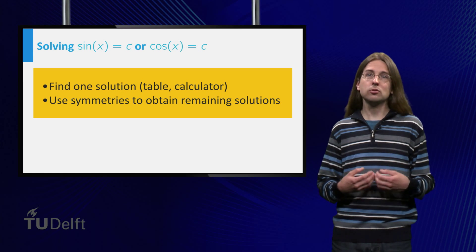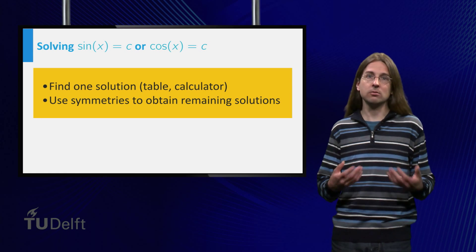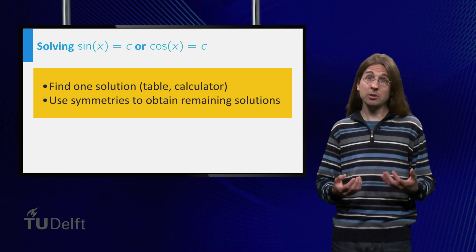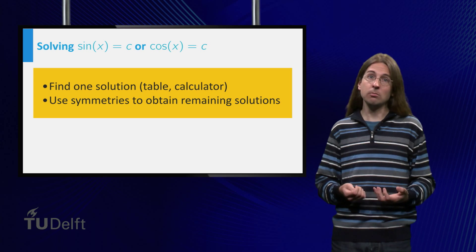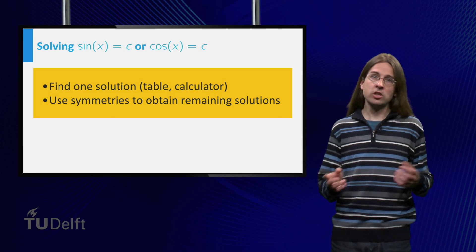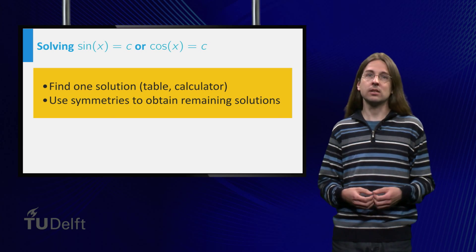You have now seen how to solve a basic equation, sin(x) = constant. A similar method works for cos(x) = constant. Find one solution using a table or a calculator, and shift and reflect this solution to get the other ones.